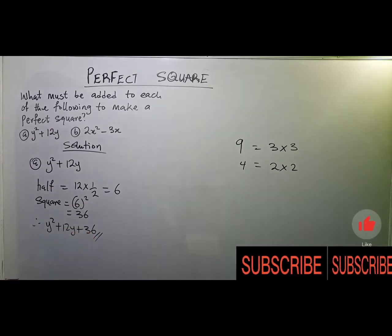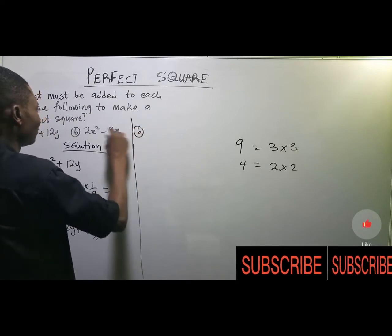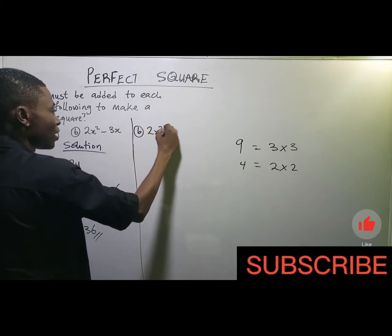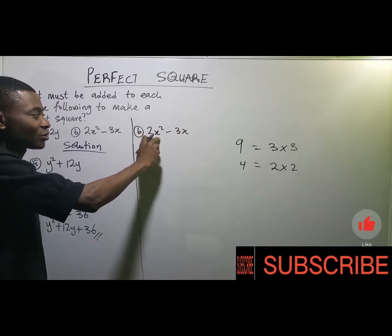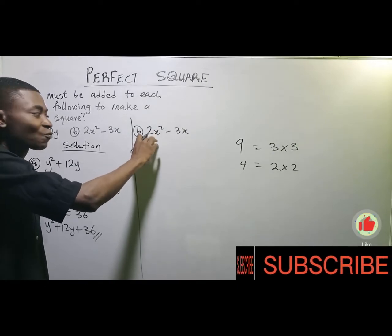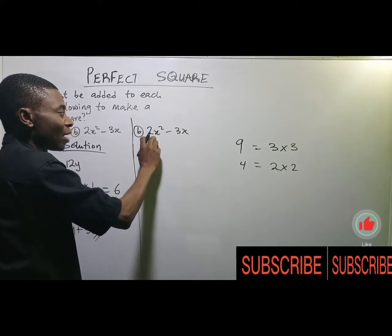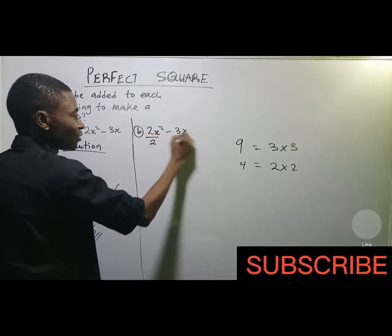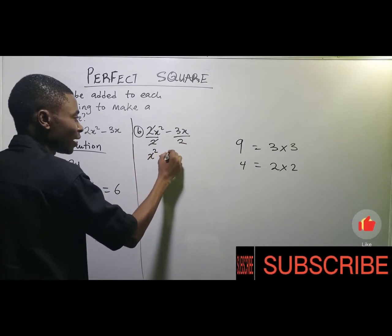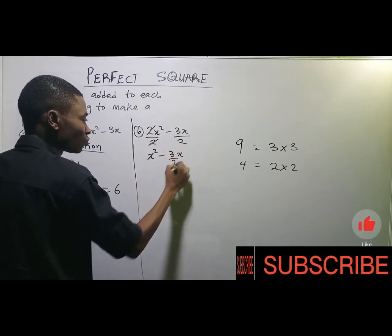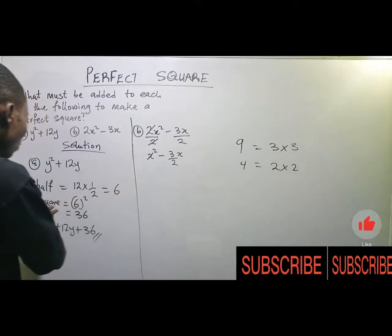Now let's look at (b): 2x² − 3x. In this case, the coefficient of x² is two, not one. So we first divide the whole expression by two. This gives us x² − (3x/2). The coefficient of x now becomes −3/2.